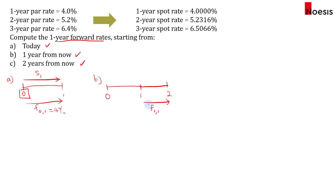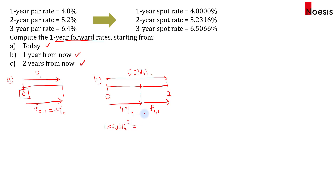To find F(1,1), we need the two-year spot rate of 5.2316% and the one-year spot rate of 4%. Based on the forward rate model, we compound 1.052316 for two years, which should equal the compounded value of 4% for one year multiplied by one plus the forward rate for one year. Working this out, the one-year forward rate one year from today is 6.4778%.